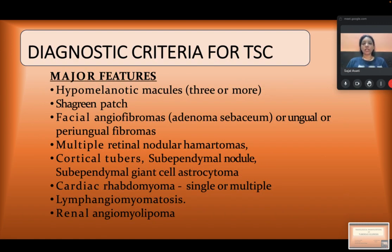The diagnostic criteria of the tuberous sclerosis complex include the following major features: hypomelanotic macules (three or more), shagreen patch, facial angiofibroma, adenoma sebaceum or ungual or periungual fibromas, multiple retinal nodular hamartomas, cortical tubers, subependymal nodules, subependymal giant cell astrocytoma, cardiac rhabdomyoma (single or multiple), lymphangioleiomyomatosis, and renal angiomyolipoma.